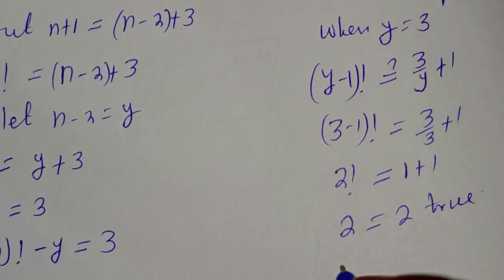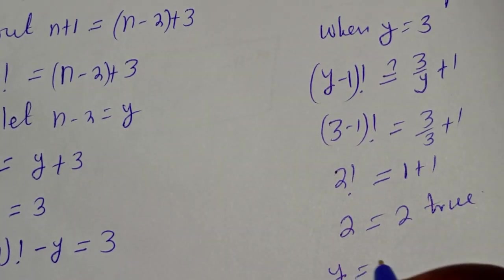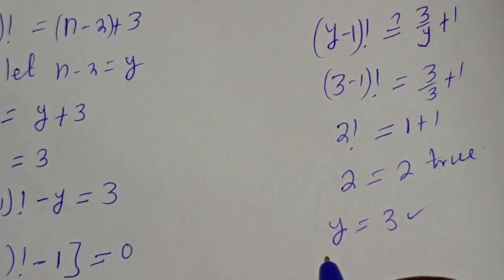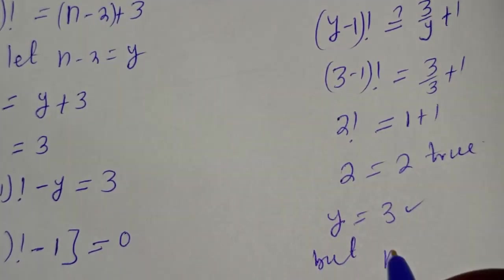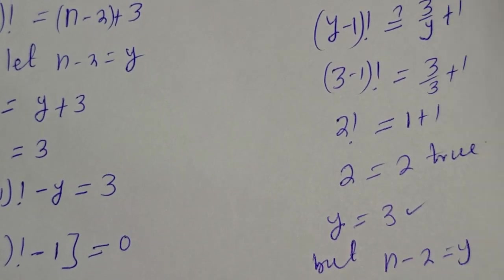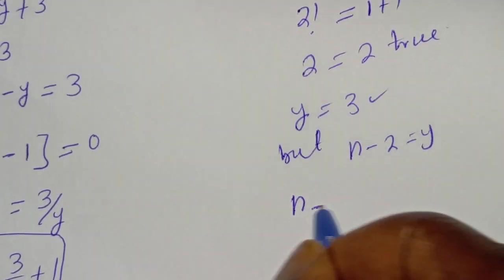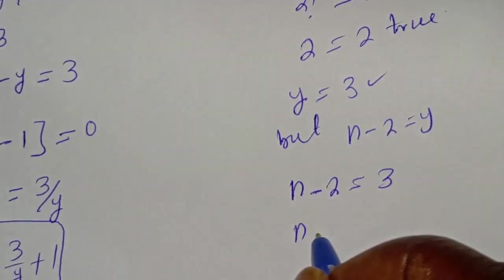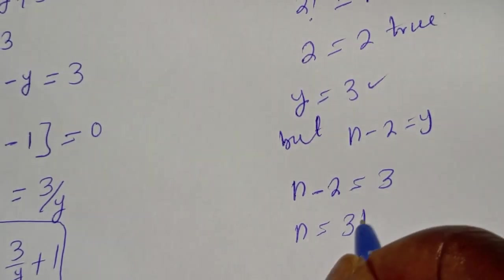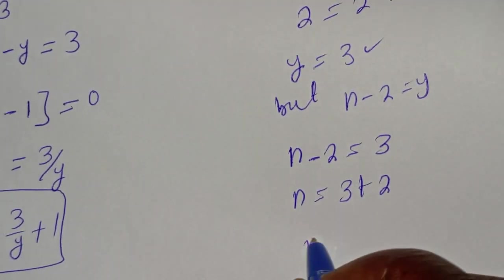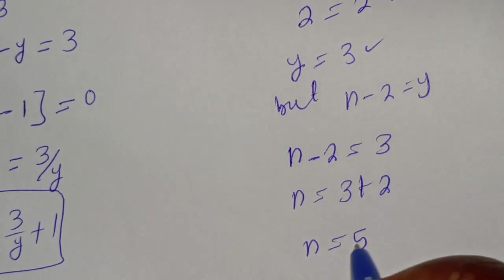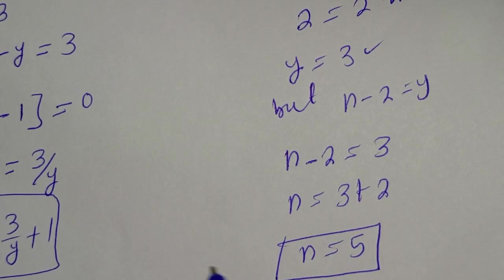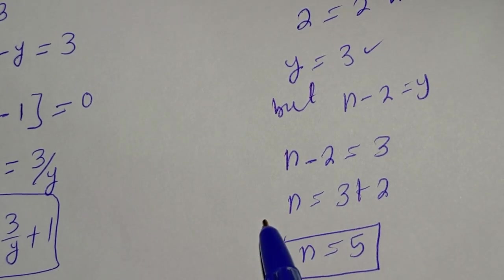Therefore y equals 3 is a true solution. But we are looking for the value of n. Since n minus 2 equals y, and y is 3, then n is equal to 3 plus 2. Therefore n is equal to 5. This is the final answer. If you enjoyed the class, please don't forget to like, share, comment and subscribe. Thank you, bye bye.